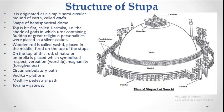The Chhattr sits on top of the Harmika. There are three layers, and each layer signifies something different. The first layer represents respect. The second layer represents veneration or worship — that is, bhakti. The third layer represents magnanimity, meaning forgiveness. Together, these three layers represent the Buddha's teachings.